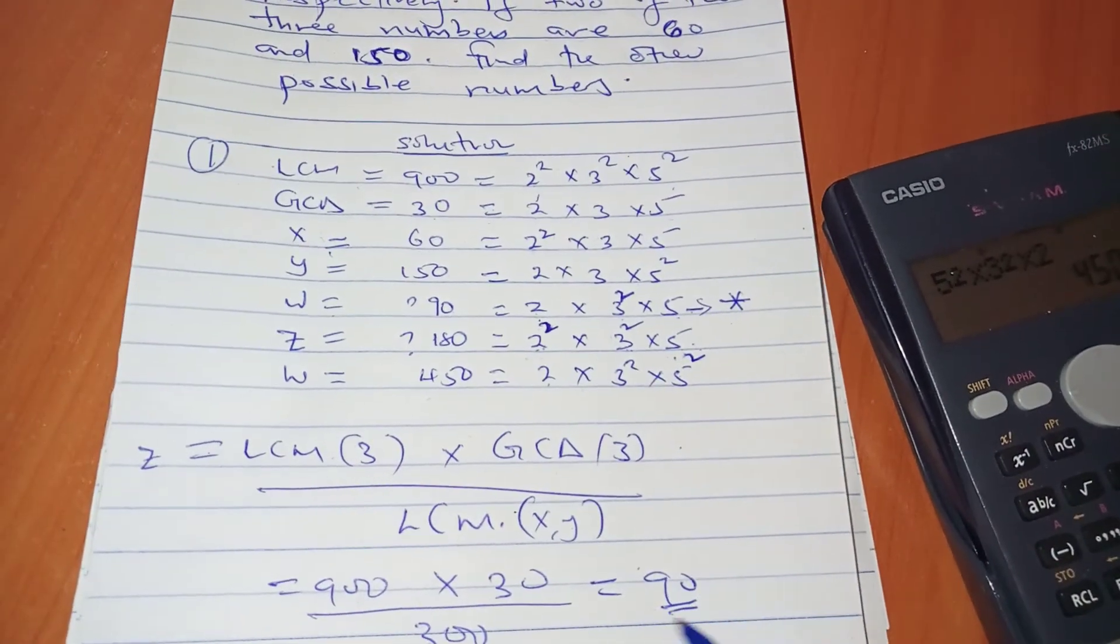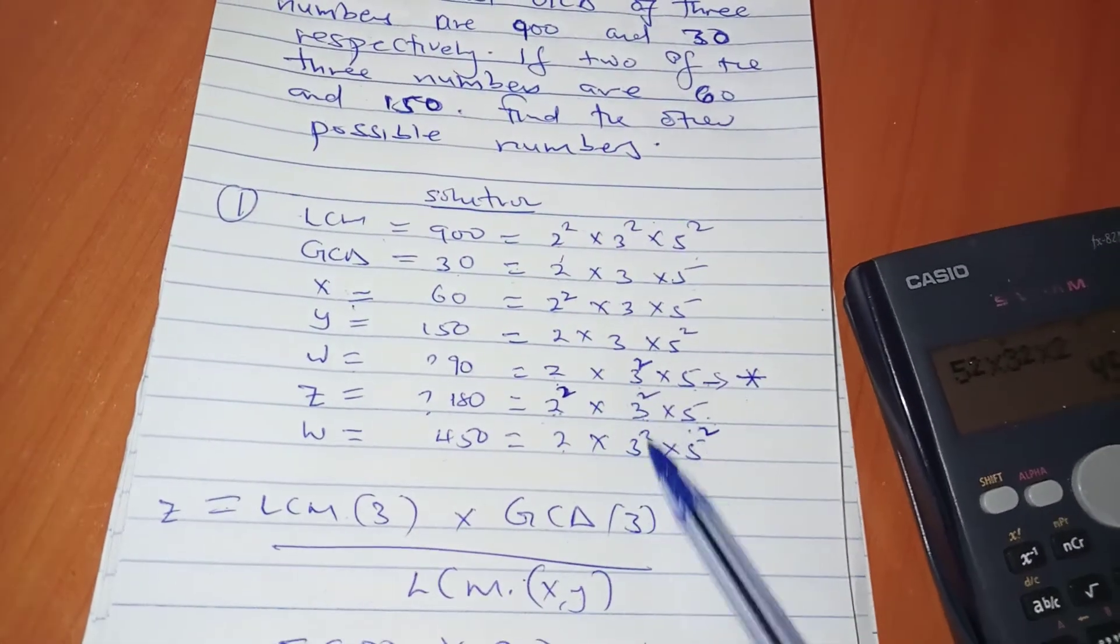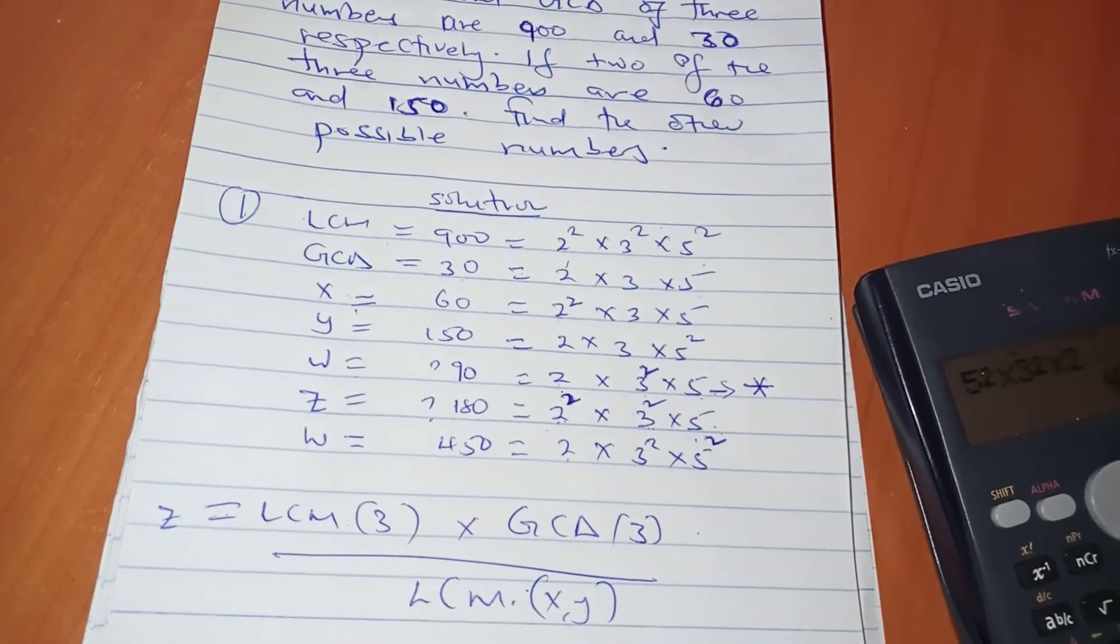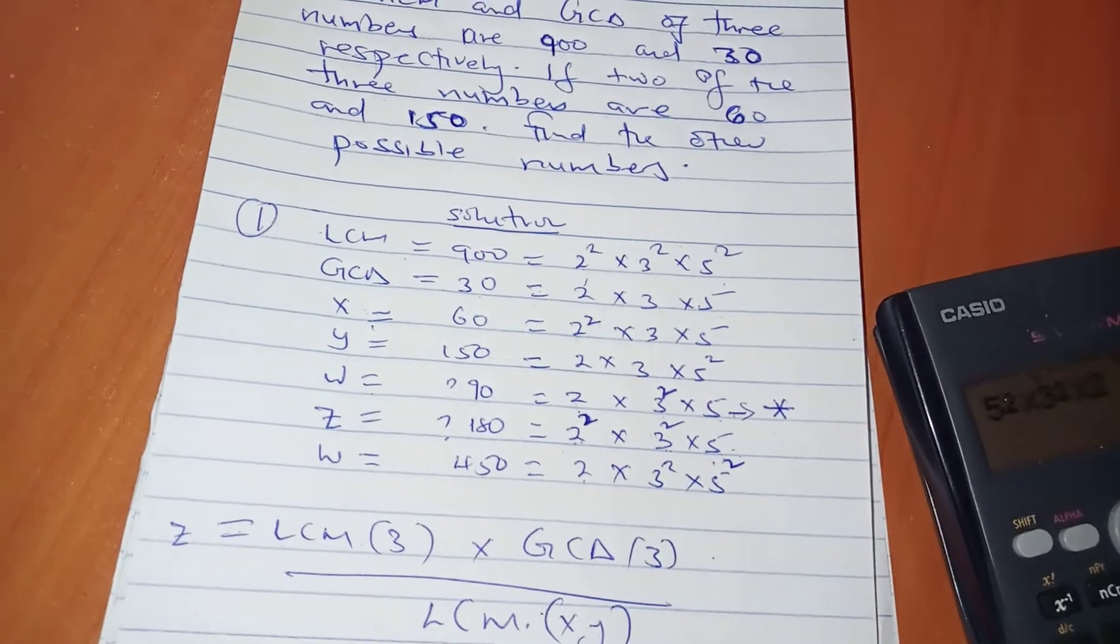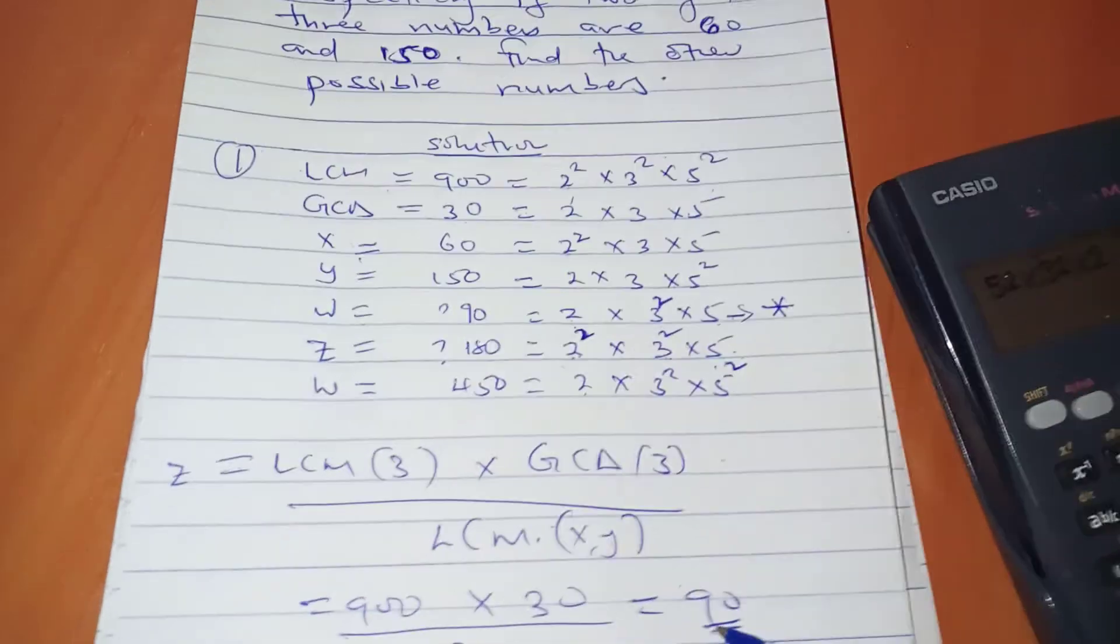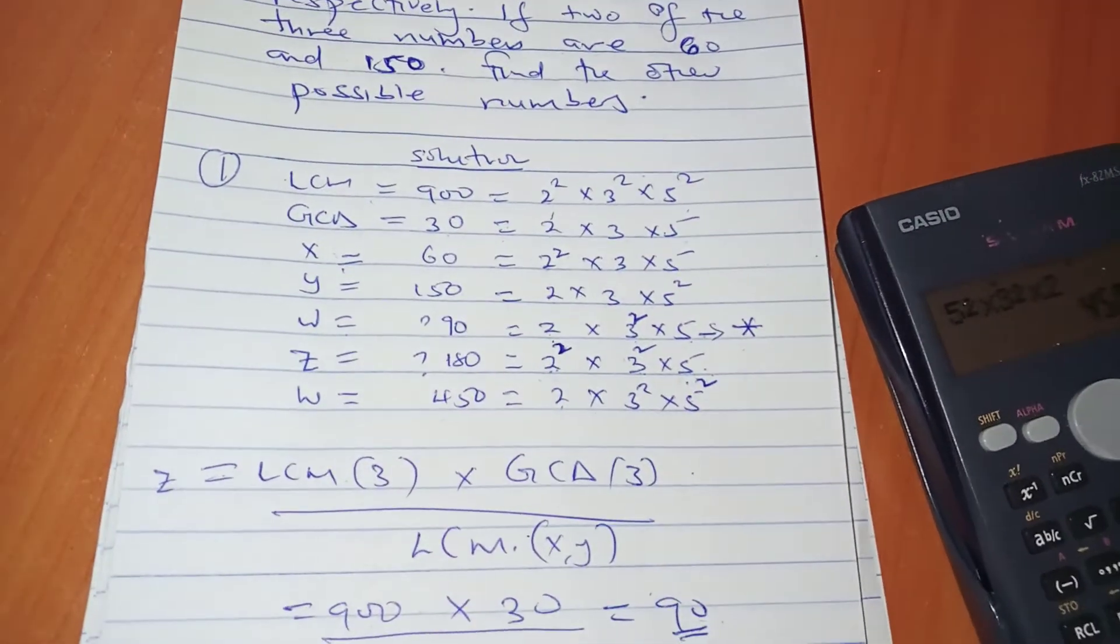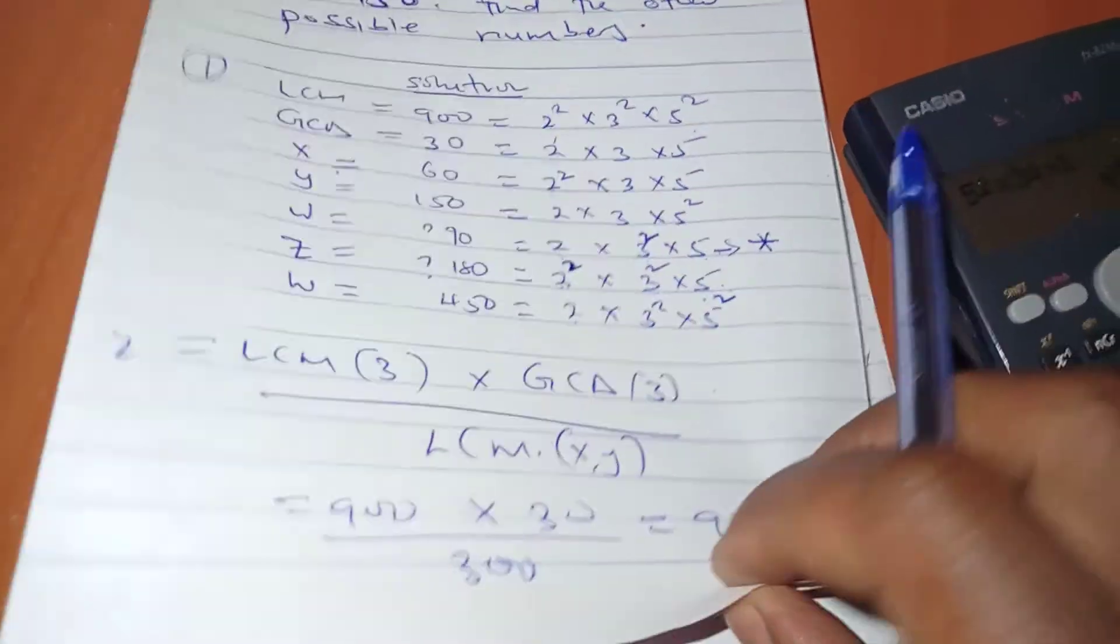This gives us 90 as the minimum number. You need to use this 90 to extract any other number you want. You can write 90 in its prime factor form, and then manipulate the powers just like we did before.